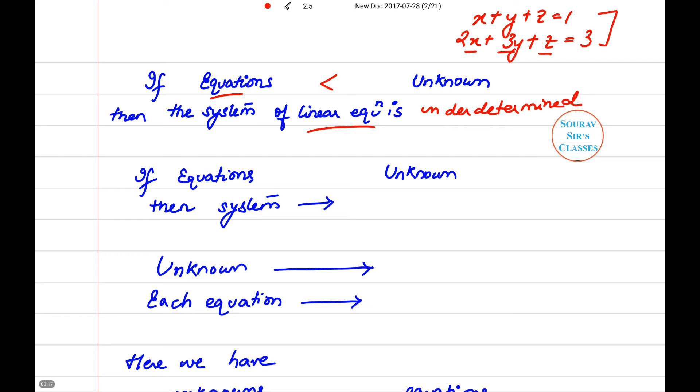And if the number of equations are greater than the unknowns, then the system is said to be over-determined. Now when unknowns are introduced in a particular equation, each unknown can be seen as an available degree of freedom.